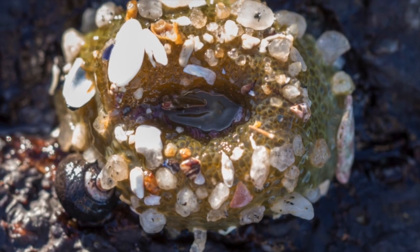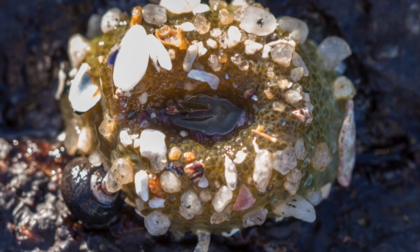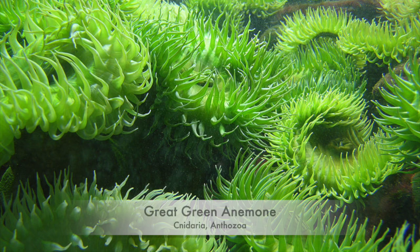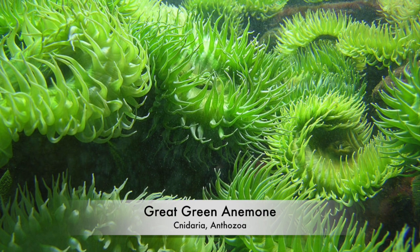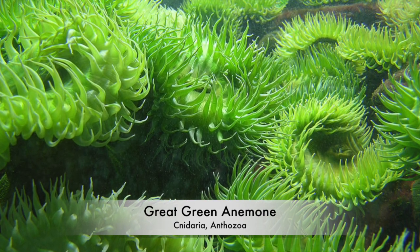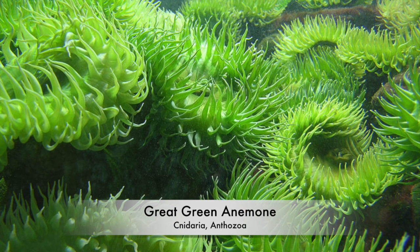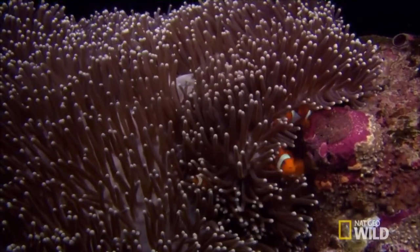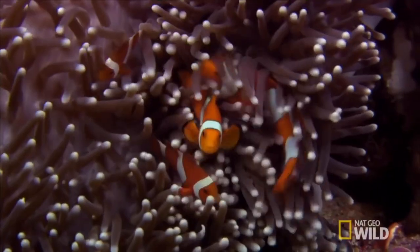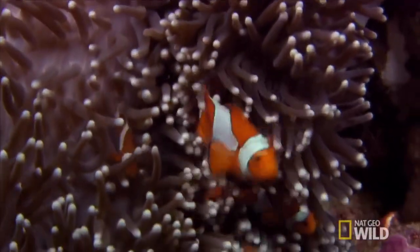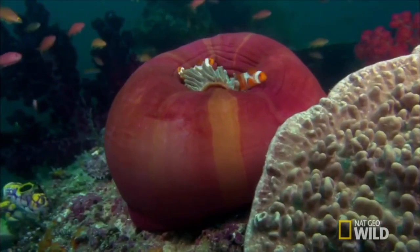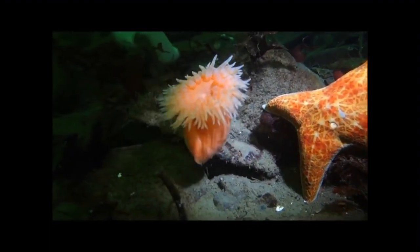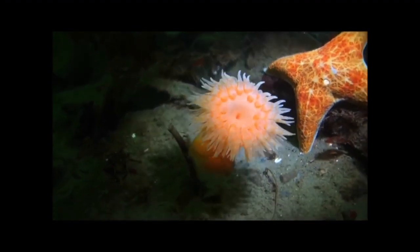Sea anemones are often found in pools and cracks for constant moisture. They can tolerate short periods of exposure to air, but usually close up during low tide to prevent drying out. The anemone's most important adaptation is its mutualistic relationship with the algae growing inside it. The algae makes energy through photosynthesis and produces oxygen for the sea anemone in return for protection and nutrients. Clownfish also have a mutualistic relationship with the anemone — they rub gently against tentacles to coat themselves in venom, which tricks the anemone into providing a home. The clownfish ward off any other fish that tries to eat the anemone, while sea anemones use their nematocytes to fight off predators.